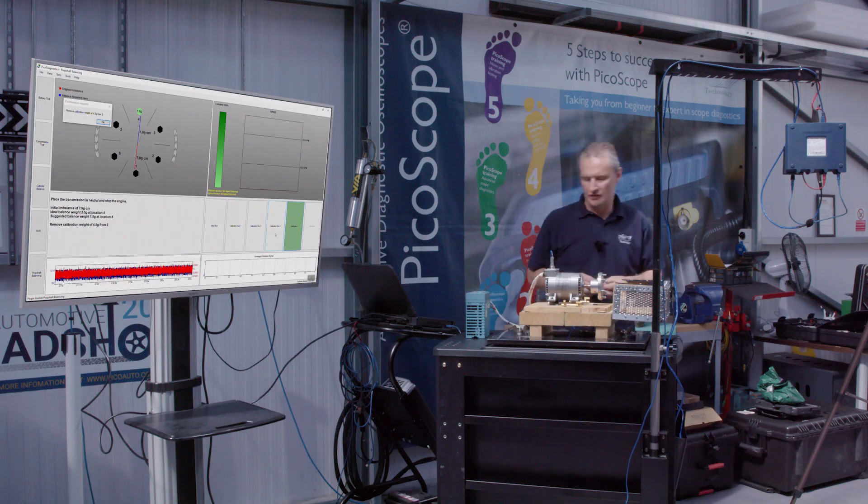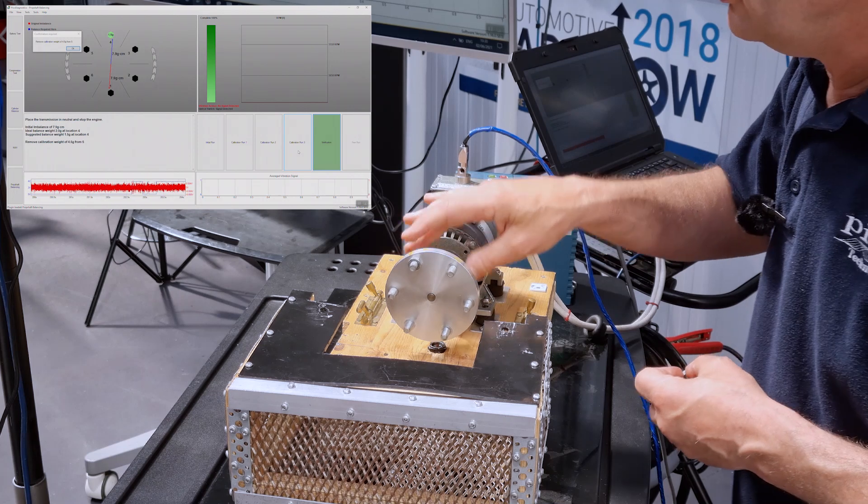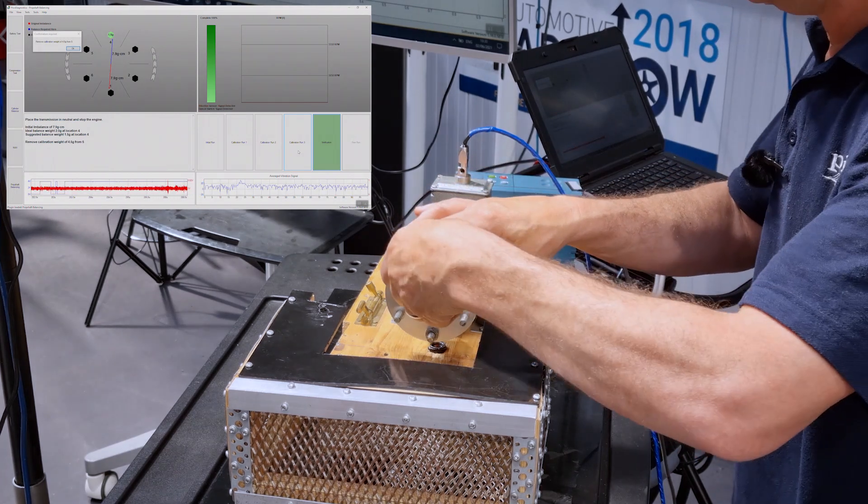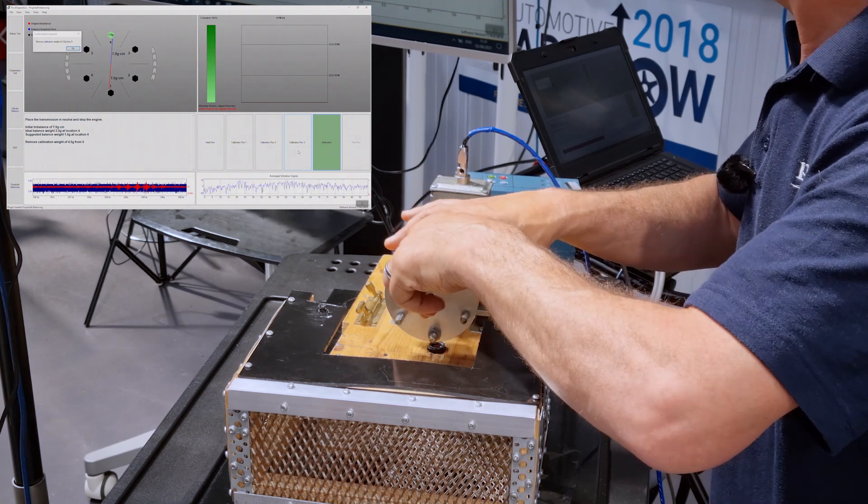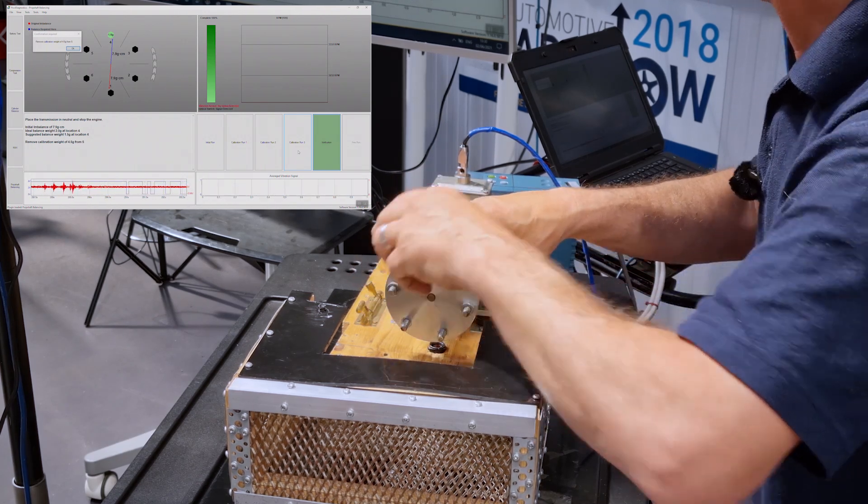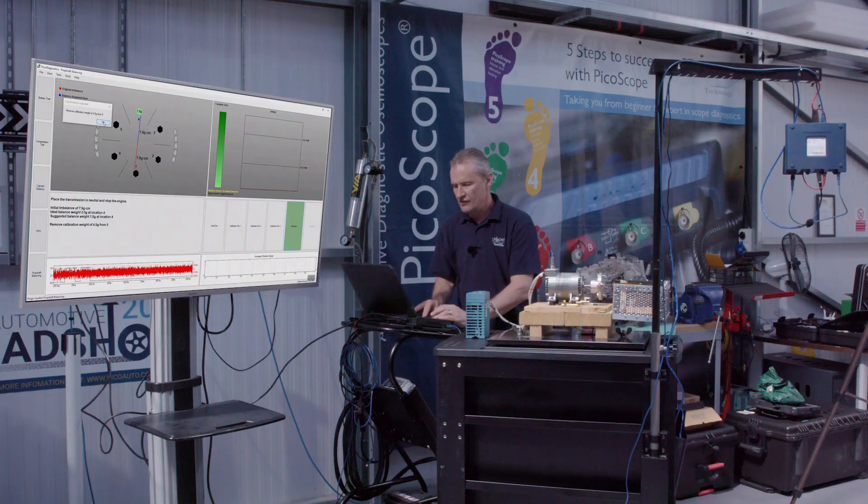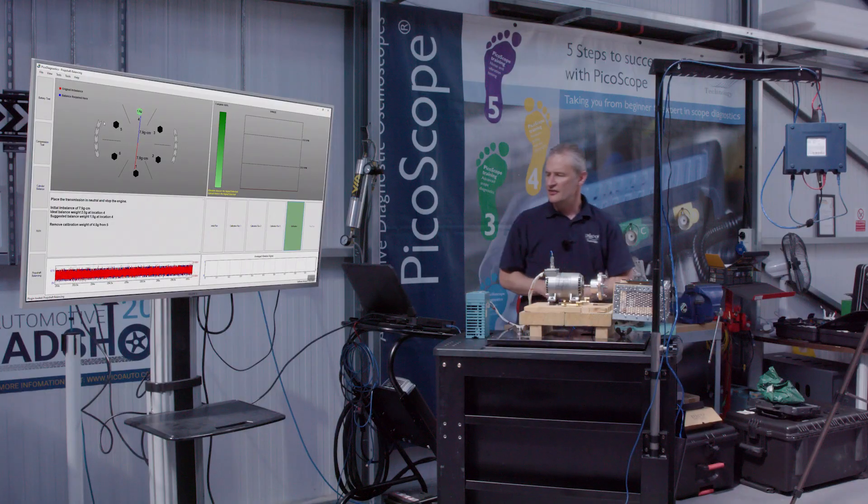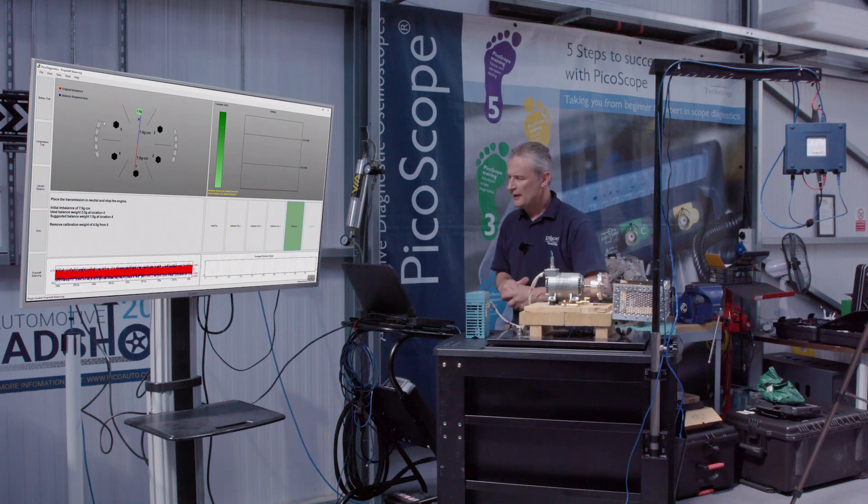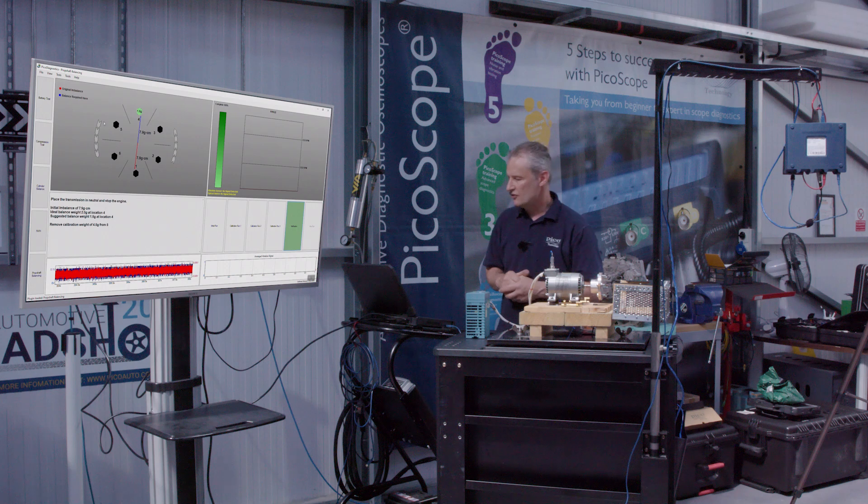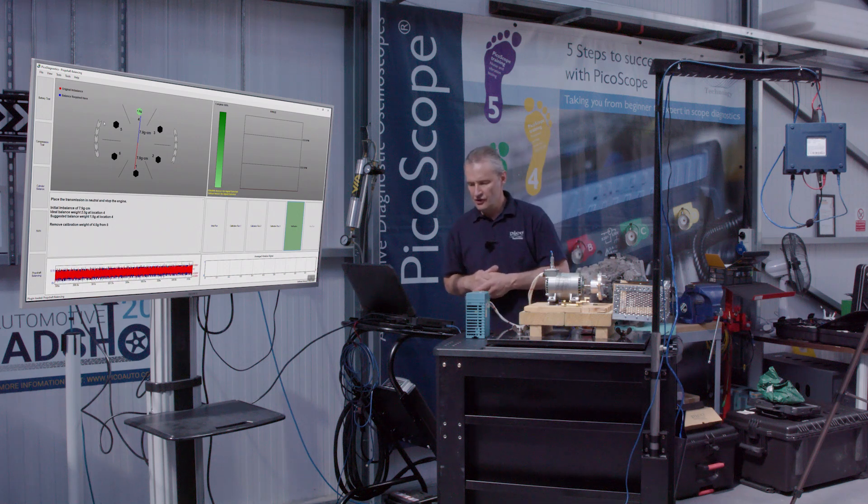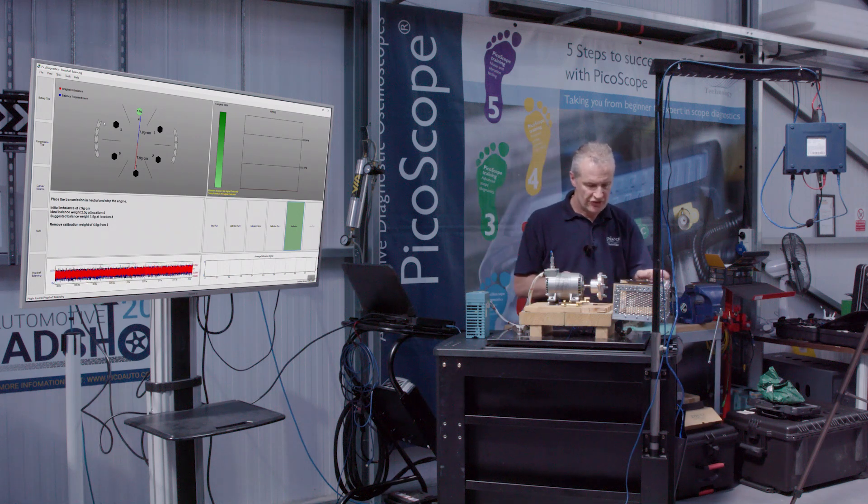Our instructions from the software are to suggest imbalance weight of 1.5 gram at location four. Okay, so, we've got, we know we are opposite bolt one. We'll put this imbalance here, this trial weight at bolt number four. So, we are exceeding the recommended weight. You can see there the arrow denotes the balance required. The blue arrow tells you where we need to put this balance weight to sweeten the shaft out. And the red arrow points to where the original imbalance was. So, let's run with these two on and just see what we can achieve.